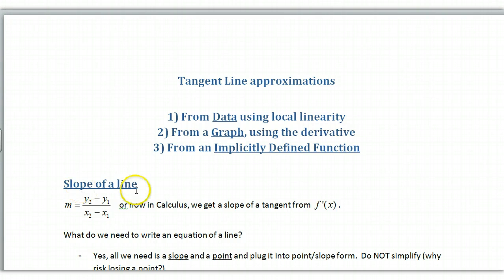Hi, this is AP Calculus Review. We're going to do tangent line approximations three ways: one from data using local linearity and points around a certain point, from a graph using the derivative graph, and from implicitly defined functions.